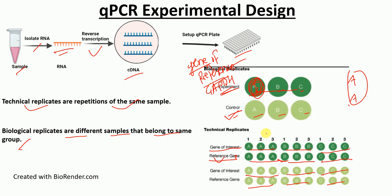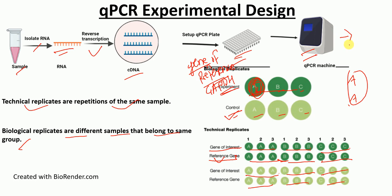After loading the samples in the plate, you insert the plate in the QPCR machine and run the program. After running the program, you will get the data in the form of CT values. From the CT values, you can determine fold changes or the relative expression level of the gene and compare expression between the experimental and control samples. I have already explained how to perform the analysis of QPCR data in an Excel sheet in my previous video, the link for which is provided in the description.